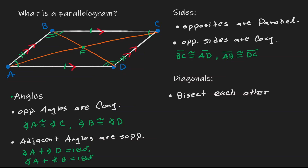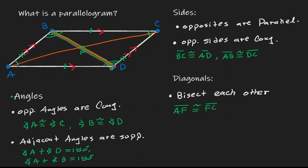If diagonals bisect each other, then that implies that diagonal AC got split into two equivalent line segments: AF and FC. The diagonal got split in half by the other diagonal. The same can be said about diagonal BD — it got bisected and cut into two equivalent parts, so we can claim that BF is congruent to FD.